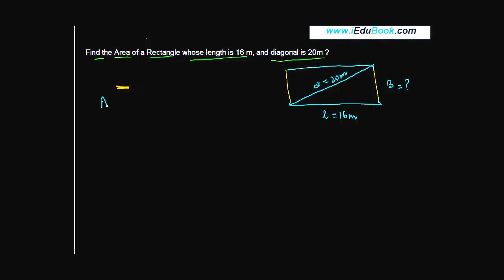But from what we know about rectangles, we are aware that the area of a rectangle is equal to the length of the rectangle, represented by L, into breadth. The length we know is 16 meters, into breadth which we need to find out.